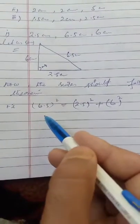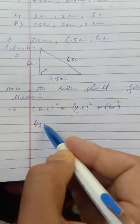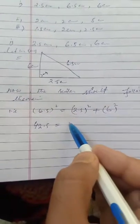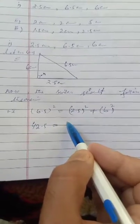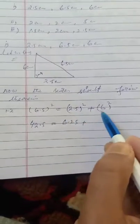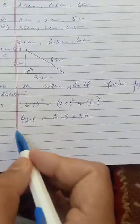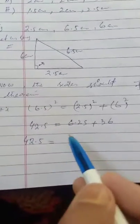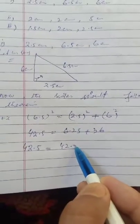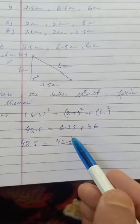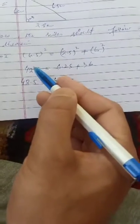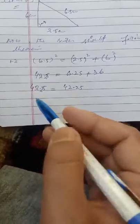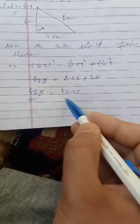6.5 square, that means 6.5 into 6.5 equals 42.25. 2.5 square, that means 2.5 into 2.5 equals 6.25. Six square equals 36. Left hand side is 42.5, right hand side is 36 plus 6.25, which equals 42.25.